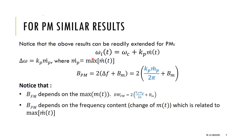For PM signals, similar results apply. The instantaneous frequency is omega_c plus k_p times m-dot, where m-dot is the maximum of the derivative of the message. Carson's rule still applies, but Δf is now k_p*M_p_dot divided by 2π in Hertz. Therefore, the bandwidth of FM depends on the maximum of the message, while the bandwidth of PM depends on the frequency content of the derivative of the message.